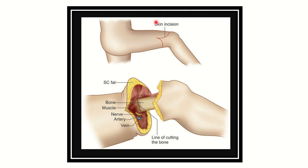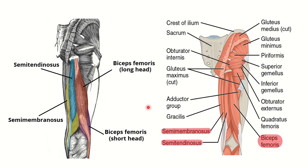In the case of above-knee amputation, first the skin, soft tissue, and muscle are cut, then the bone is also cut. In this picture we can see the posterior compartment of the thigh muscles. The posterior compartment of the thigh muscles are: semitendinosus, semimembranosus, and biceps femoris.